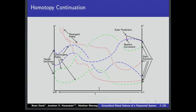This is a continuation picture where we just have our start solutions of our start system. Choose your favorite predictor method, then do multivariate Newton and follow these homotopy paths all the way to the target solutions of our target system.